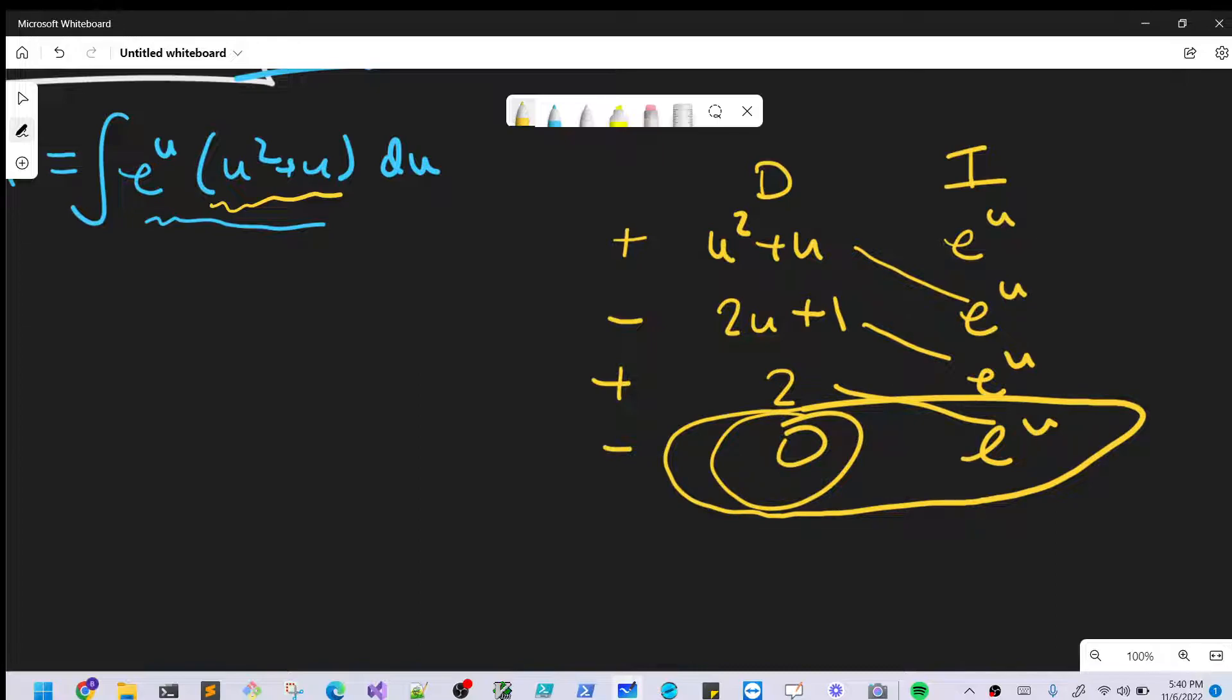So then we can just kind of pick this and write our answer. Let's do this real quick. And you know what I'm going to do? Since we have an e to the u in each row, I'm just going to factor that out and not really worry about it for a second.